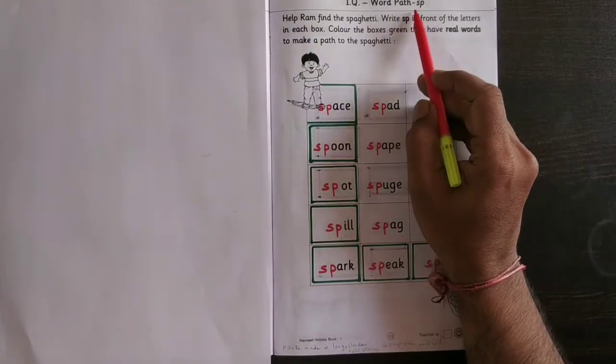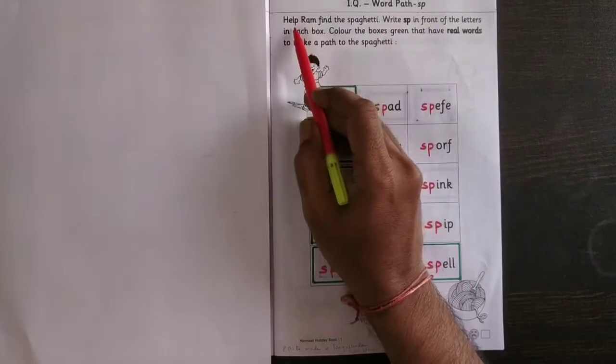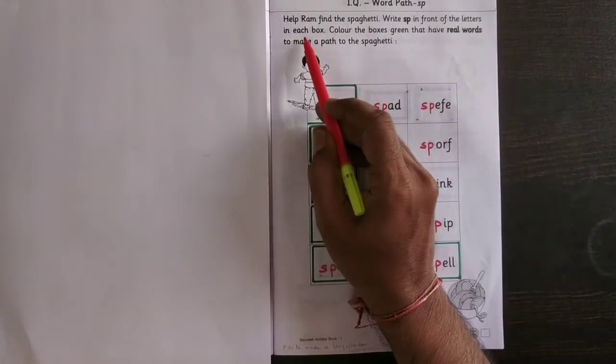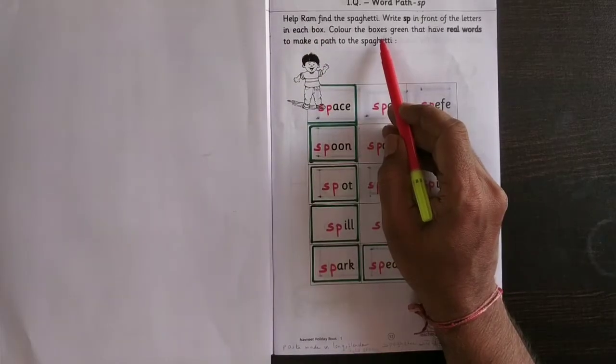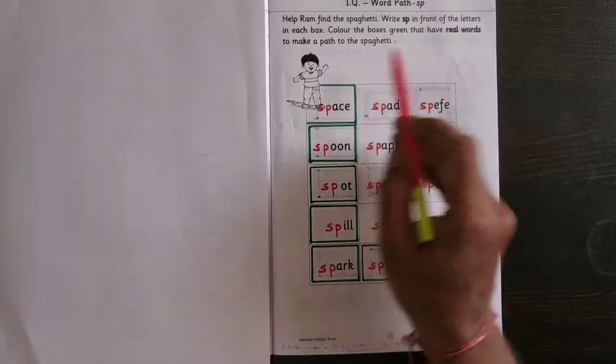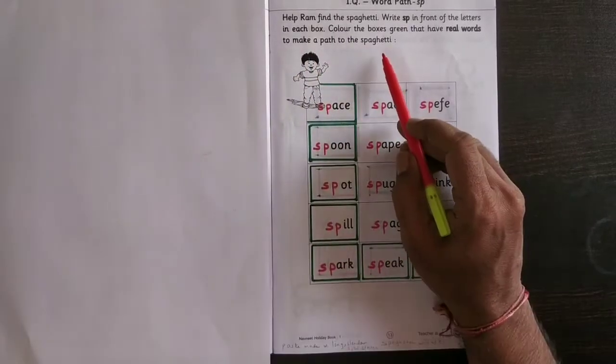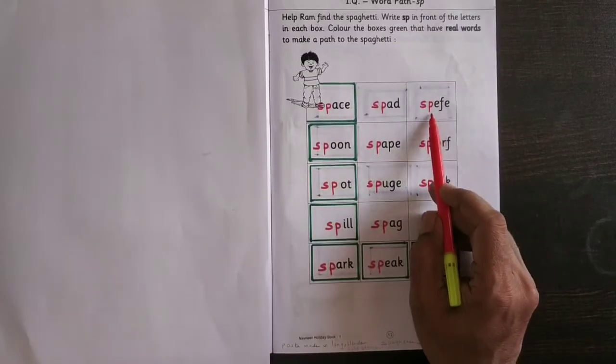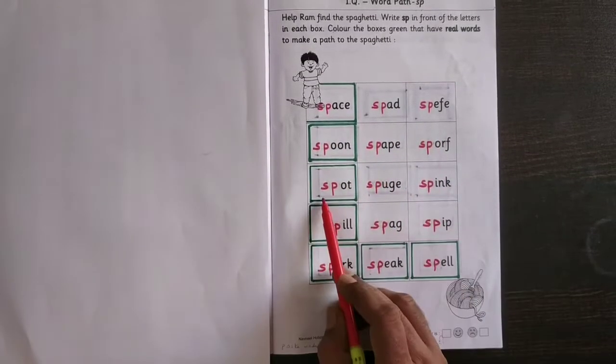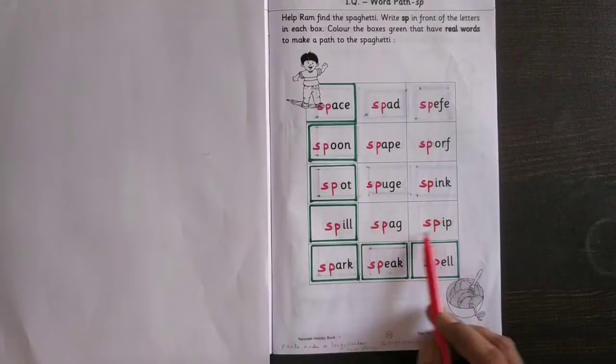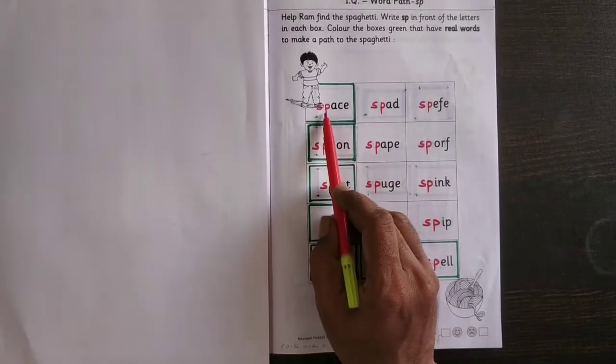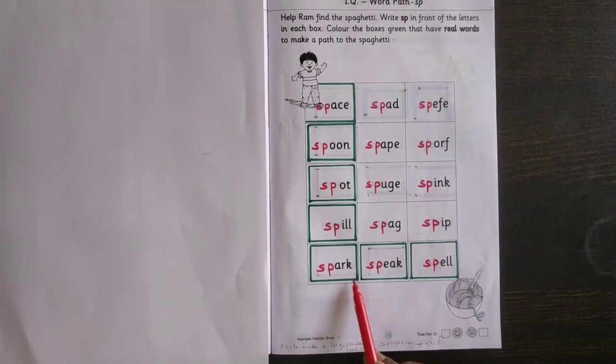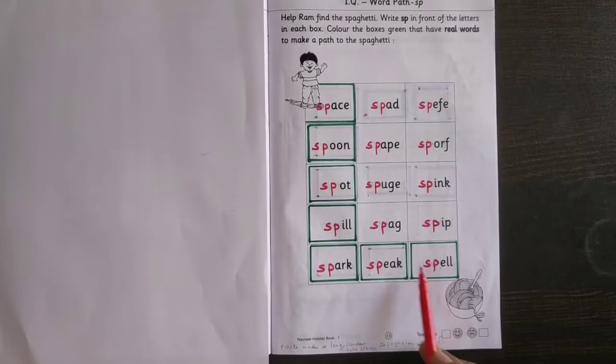Word path sp: Help Ram find the spaghetti. Write sp in front of the letters in each box. Color the boxes green that have real words to make a path to the spaghetti. Now you have to write sp in front of each given letter, and these words are meaningful words: space, spoon, spot, spill, spark, speak, and spell.